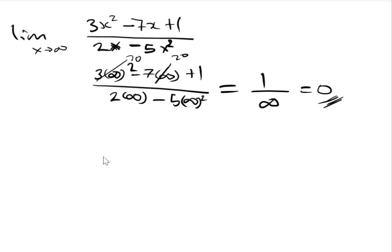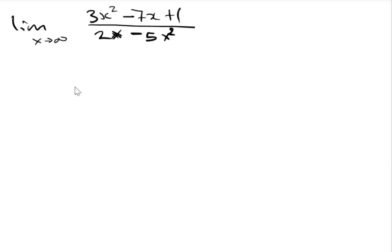So for us to solve this, we divide both the numerator and denominator by the reciprocal of the highest power of x. The highest power of x here is 2, which means we divide by x squared.